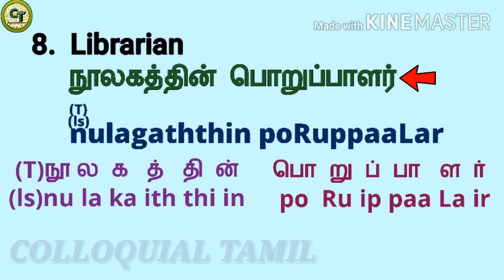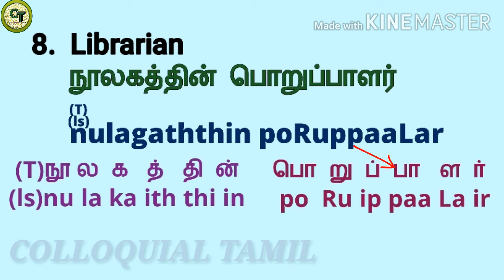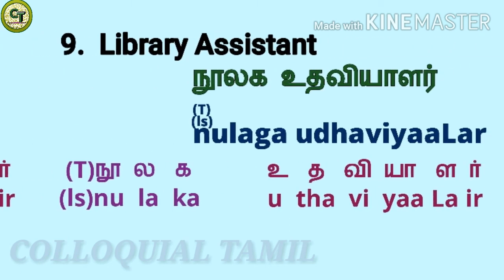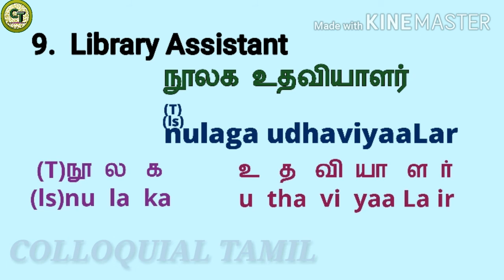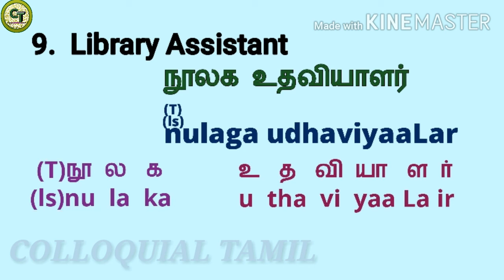For librarian, the Tamil term is noolagarthin. The other words in Tamil for librarian are also noted. For library assistant, just remove the last three letters in noolagarthin to get noolagar. If you add the consonant m at the end of noolagar, it becomes noolagam, which means library.